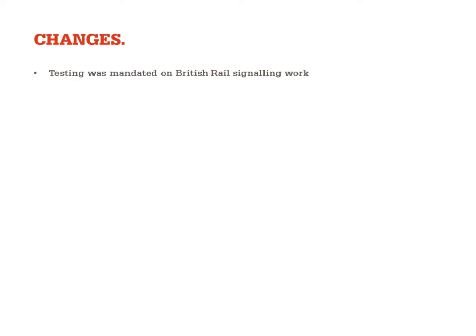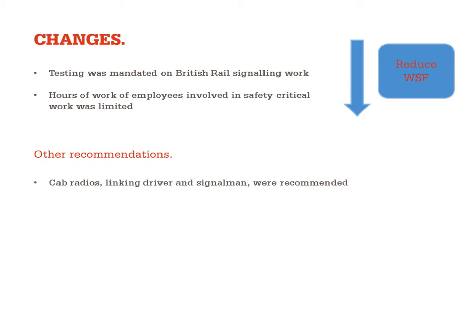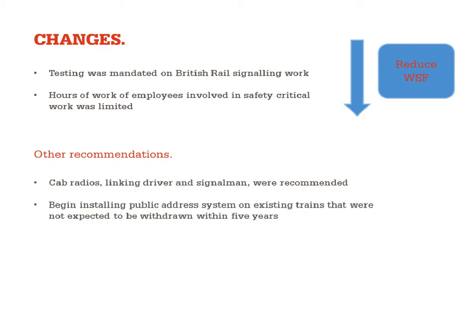There are a number of changes that were brought into the industry as a result. Testing was mandated on British Rail signalling work, and the hours of work for employees involved in safety-critical work were limited — this continues to be the case today — to reduce the probability of a wrong-side failure. Cab radios linking the driver with the signalling system were recommended, along with public address systems on existing trains, and finally the crashworthiness of trains was to be reviewed given the large loss of survival space.